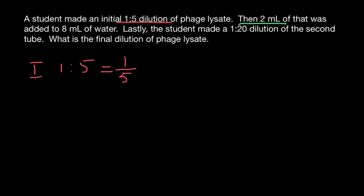Second step. Then 2 milliliters of that was added to 8 milliliters of water. So second step would be 2 divided by 2 plus 8. And we are going to get 2 over 10.